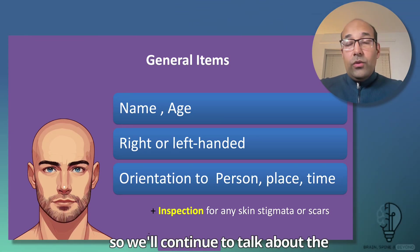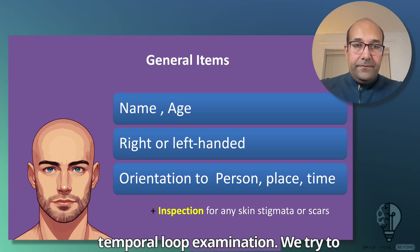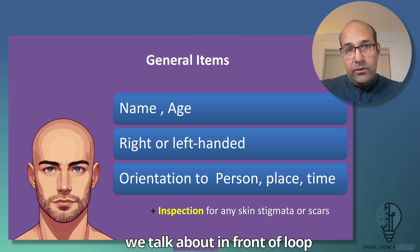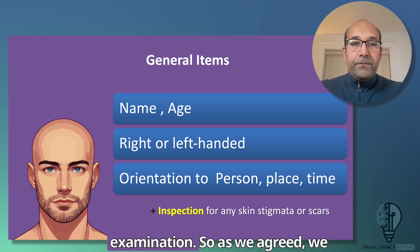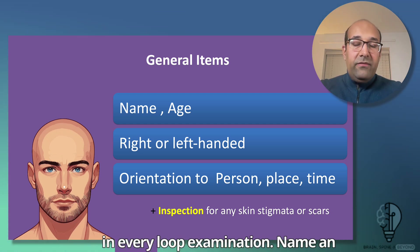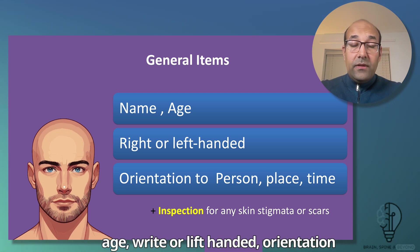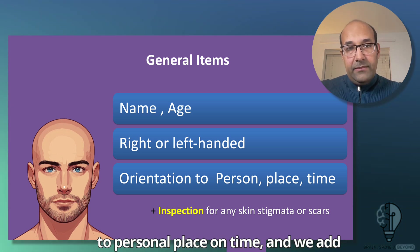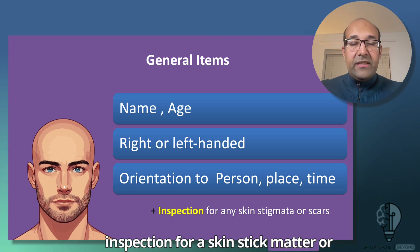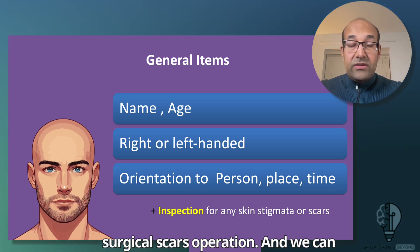We'll continue to talk about the temporal lobe examination. We use the same structured approach as in the frontal lobe examination. The general items we follow in every lobe examination include: name and age, right or left-handedness, orientation to person, place and time, and inspection for skin stigmata or surgical scars.